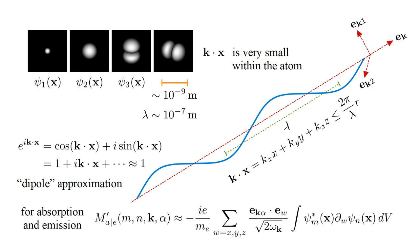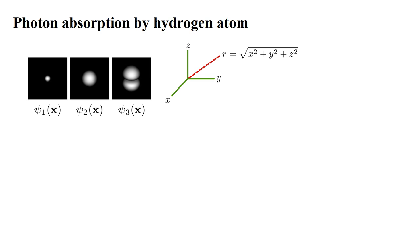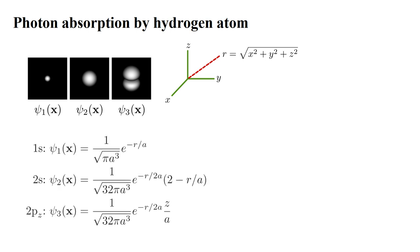Now let's analyze the absorption of a photon by a hydrogen atom using quantum field theory. We will focus on three of the lowest energy orbitals: the 1s, 2s, and 2pz orbitals, with their spatial wavefunctions shown. Here, a is the Bohr radius, about 53 picometers. The s orbitals depend only on the radial distance r, so they are spherically symmetric. The 2pz orbital has a factor of z, which is responsible for its two-lobe structure — the wavefunction is positive for positive z and negative for negative z.